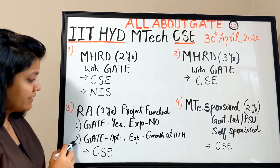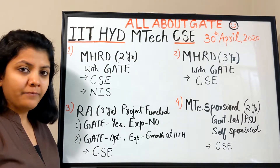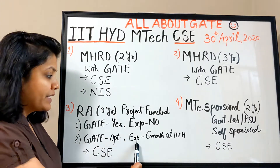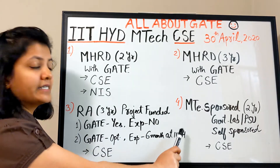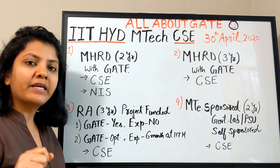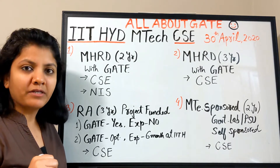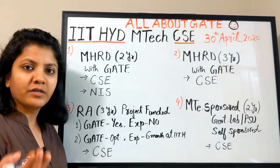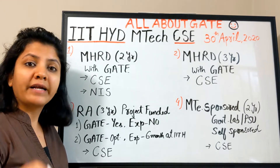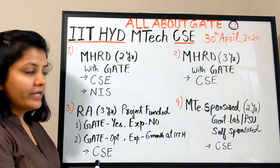This RA three-year program has two sub-options. The first is through GATE with no experience required. The second has GATE as optional but requires at least six months of experience at IIT Hyderabad — it is basically for those already working as a project trainee or research trainee under some project in the department who want to pursue their higher degree right there.